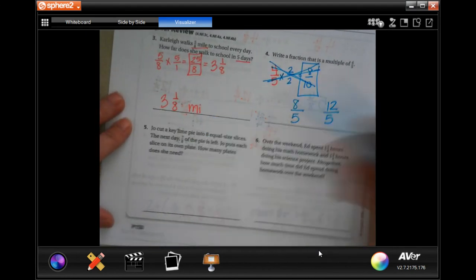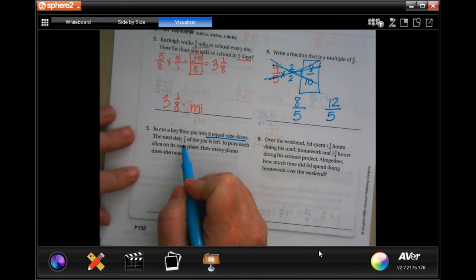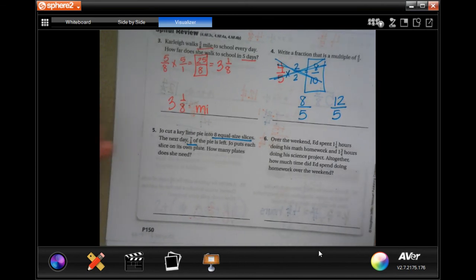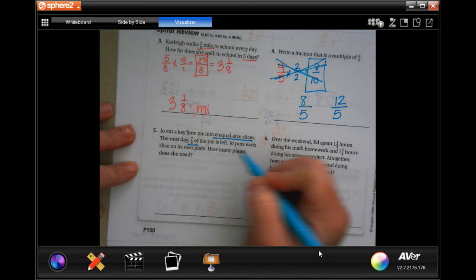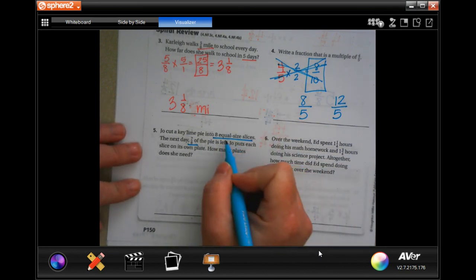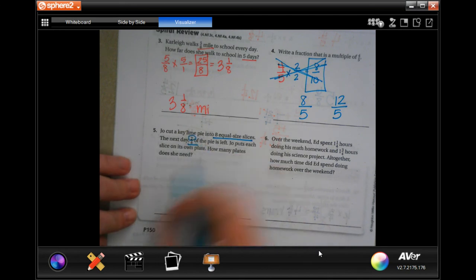All right, Joe cut a key line point, 8 equal size pieces. On the next day, 7 eighths of the pie is left. Joe puts each slice on its own plate. How many plates does he need? Well, if each piece is 1 eighth and there are 7 eighths left, then he's going to need 7 plates.